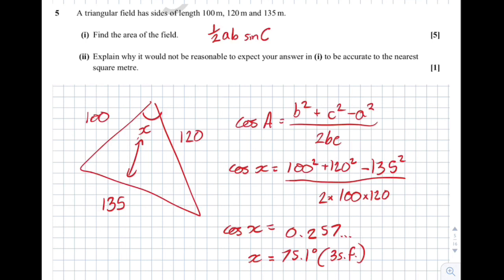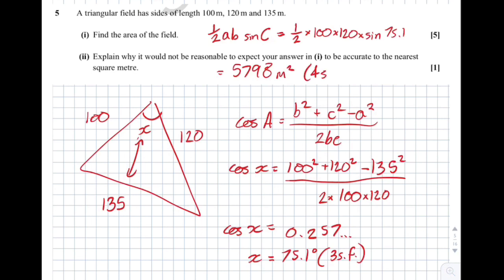Now substituting into the area formula: half times 100 times 120 times sine of 75.1 degrees — using the exact stored answer. That gives approximately 5,798 metres squared to four significant figures. The mark scheme wants the answer as 5,800.